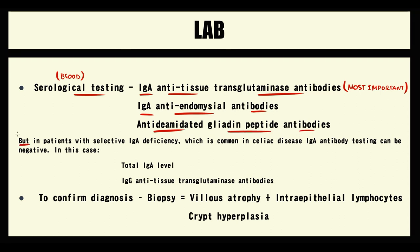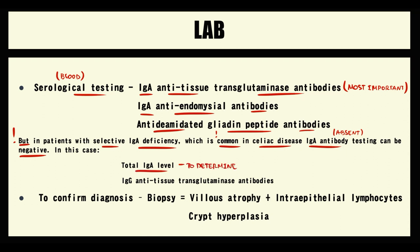A complication in diagnosis is that some celiac disease patients have selective IgA deficiency, meaning they simply cannot produce IgA, so all IgA antibodies will be negative despite the presence of disease. In this case, if celiac disease is strongly suspected but IgA anti-tissue transglutaminase antibodies are negative, we measure total IgA level to confirm selective IgA deficiency, and then test for IgG anti-tissue transglutaminase antibodies, since IgG production remains intact and these antibodies will be positive.